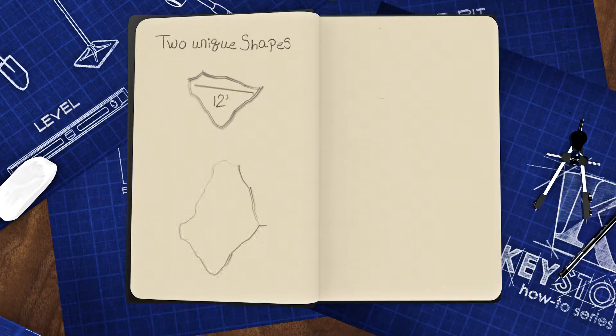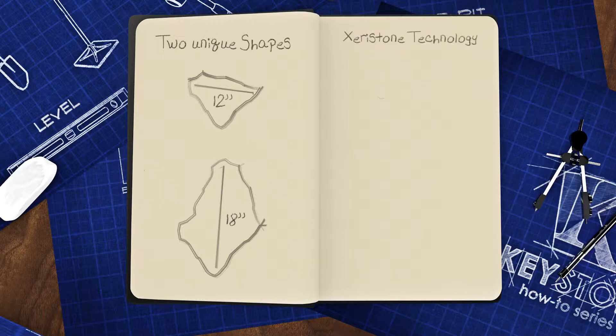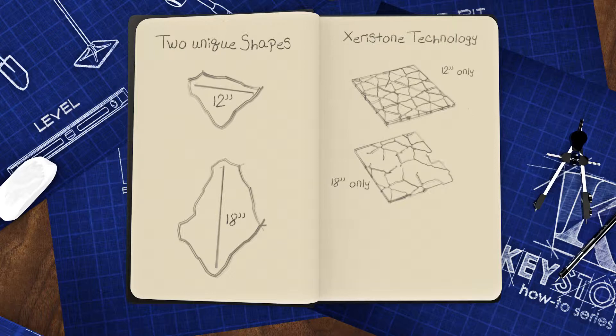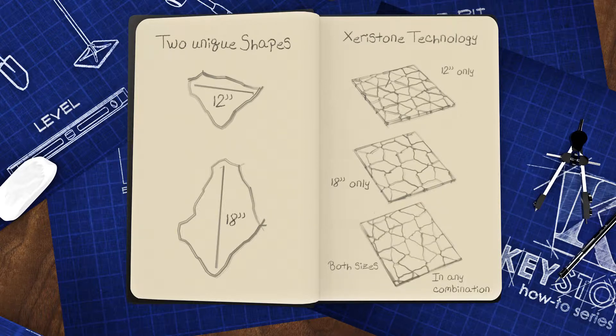Canyonstone comes in a 12-inch and an 18-inch shape. Not every retailer carries both sizes. Not to worry. With our patented ZeroStone technology, you have the flexibility to use the 12-inch by itself, the 18-inch by itself, or you can use both shapes together in almost endless combinations.